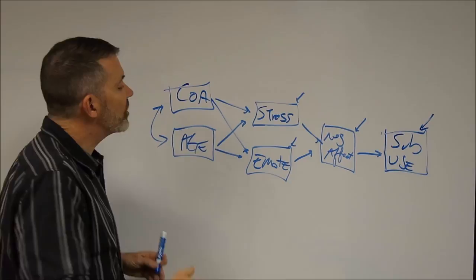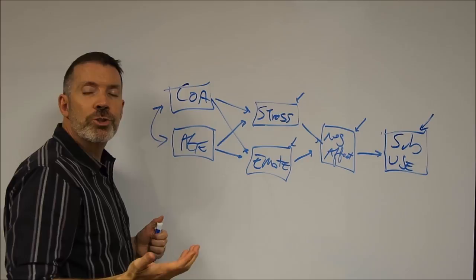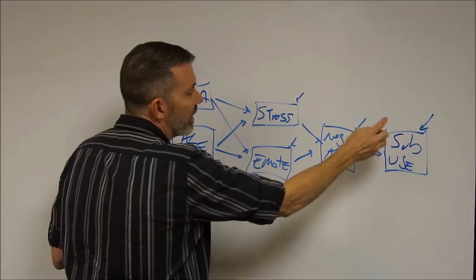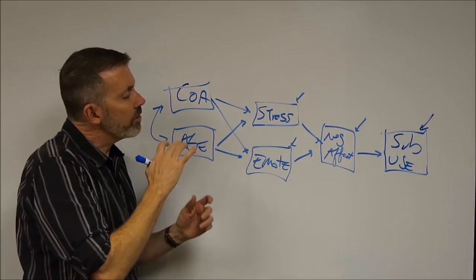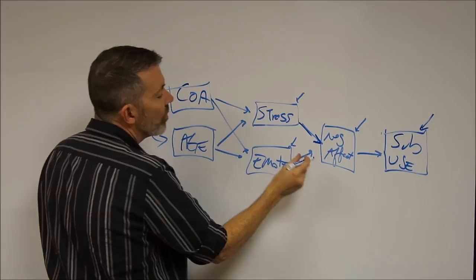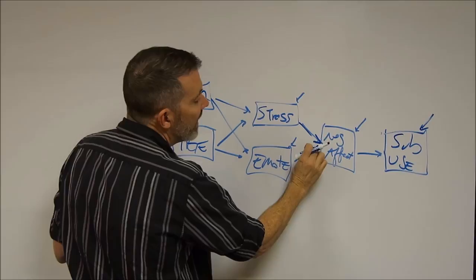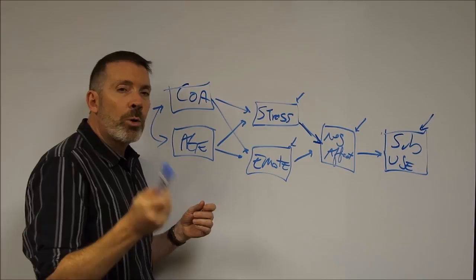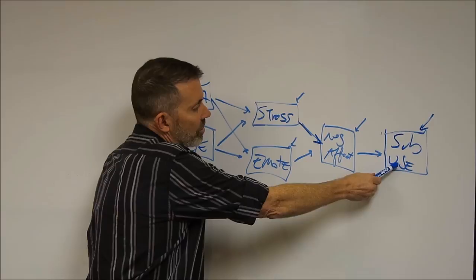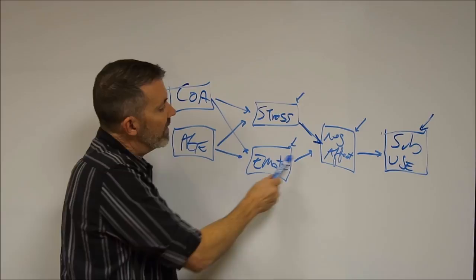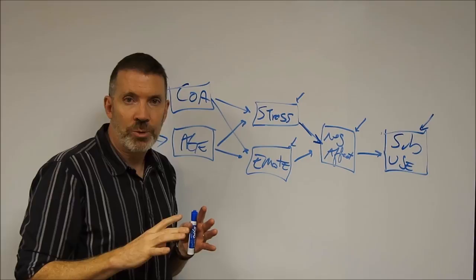Instead of having a single dependent variable, we now have four dependent variables. This is also the source of the term simultaneous equation models — there's an equation for every dependent variable: for stress, for emotionality, for negative affect as a function of stress and emotionality, and so on. We've structured the relations in highly defined ways where COA leads to stress, which leads to negative affect, which leads to substance use. Equally important is that we have fixed a number of these paths to zero, meaning we haven't estimated them. COA does not directly affect negative affect, and COA does not directly affect substance use. We've restricted the parameter space.